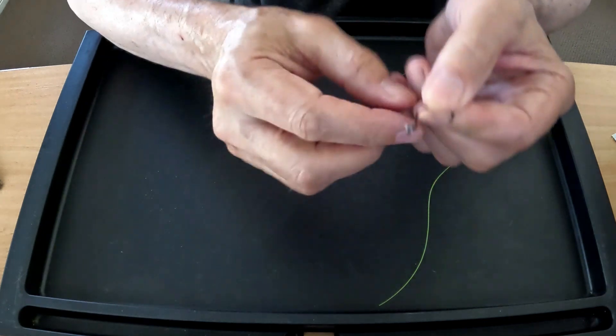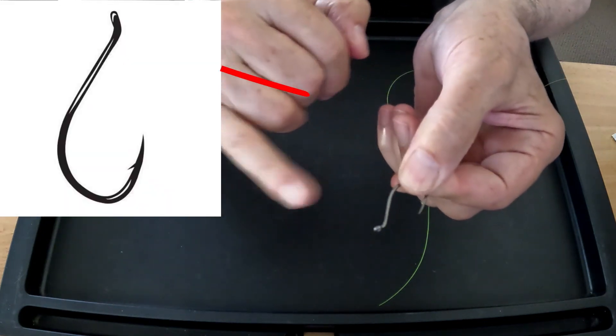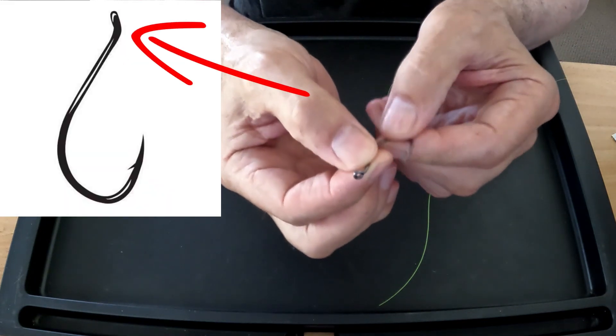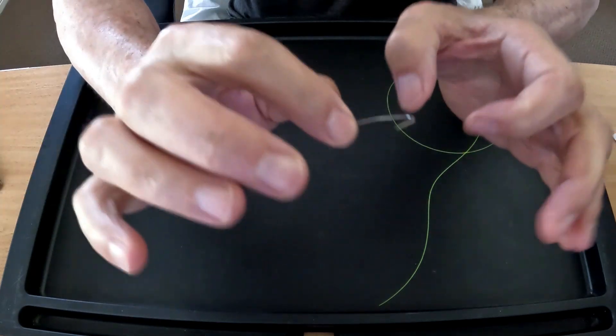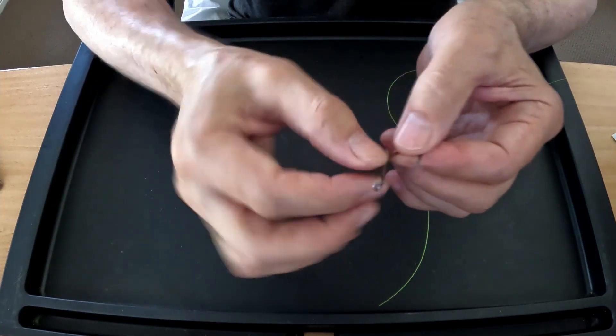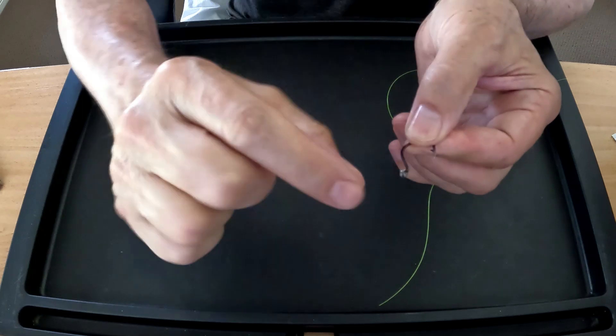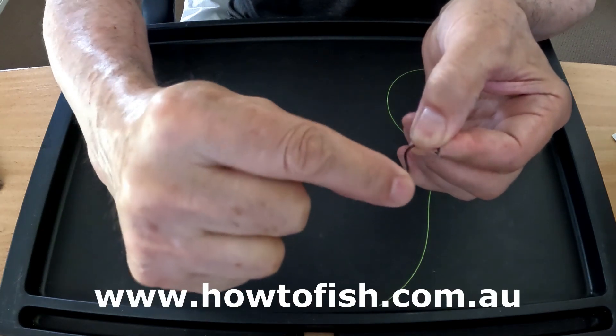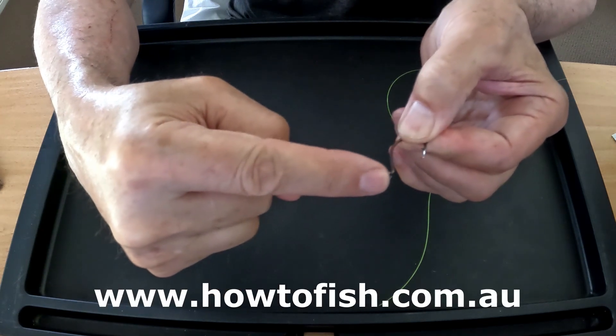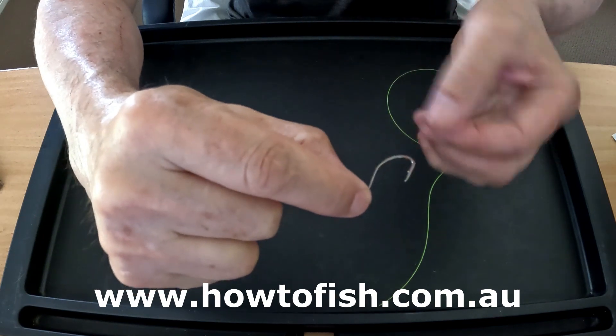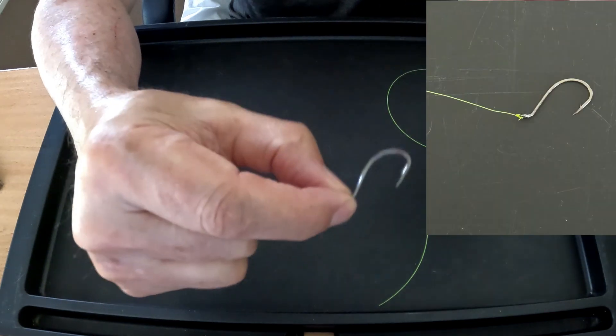The thing about it though, it's got this outturned eye. So I like the shape of these hooks, but this outturned eye means that if I was to actually tie the line on there with a conventional blood knot, for instance, it would actually hold the hook this way.